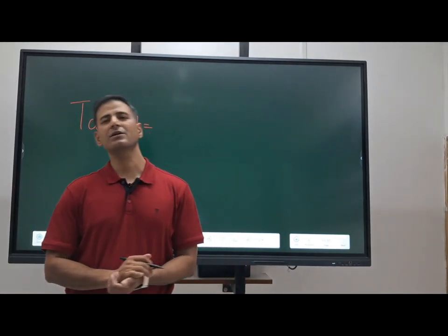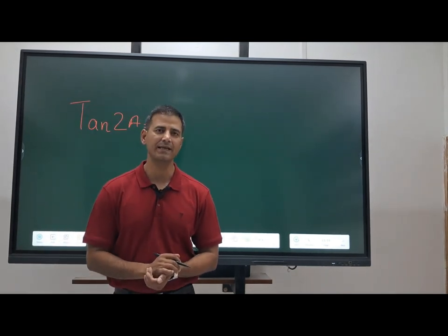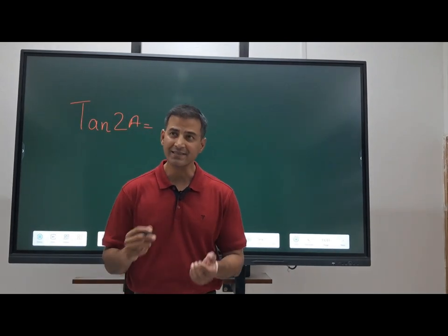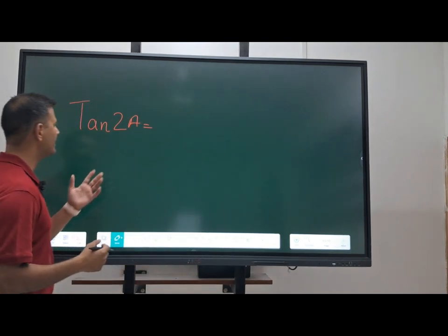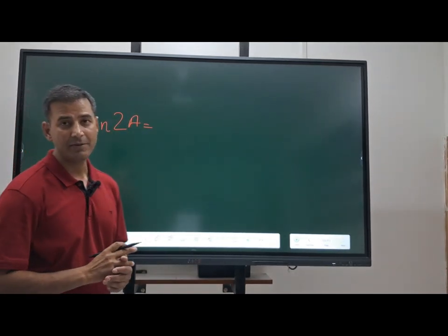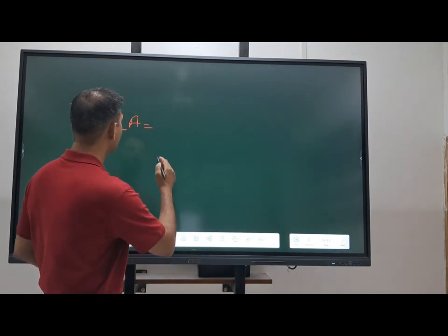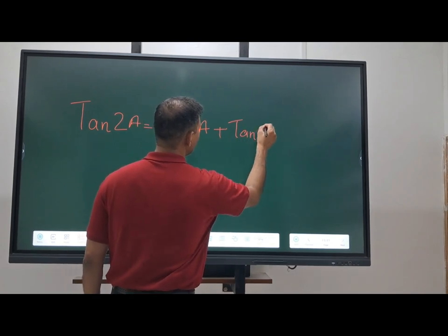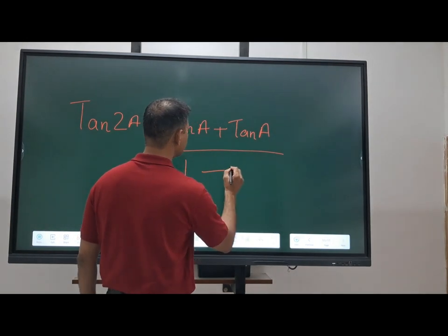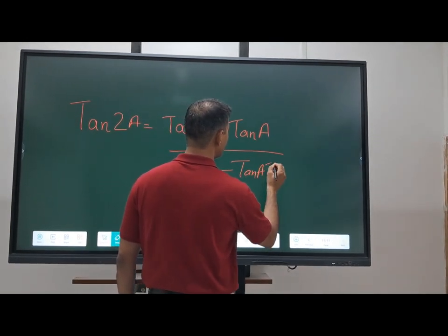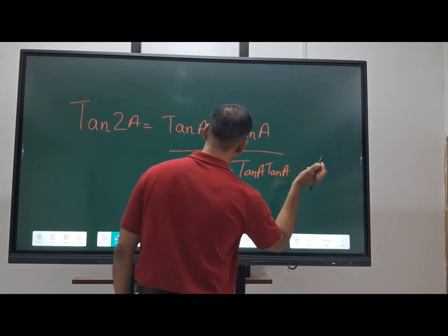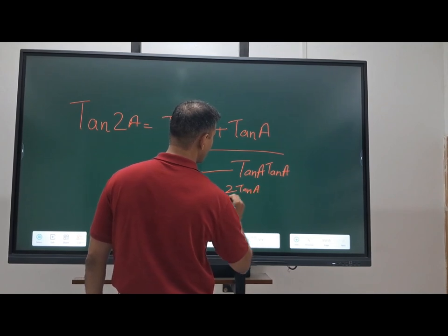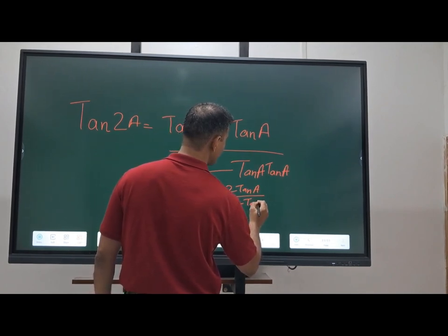For tan 2A, using the formula tan(A+B) = (tan A + tan B)/(1 − tan A tan B) and replacing B with A: tan 2A = (tan A + tan A) / (1 − tan A · tan A) = 2 tan A / (1 − tan²A).